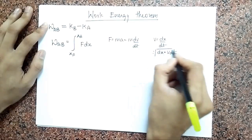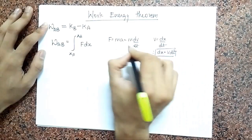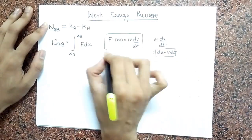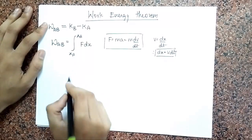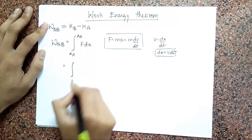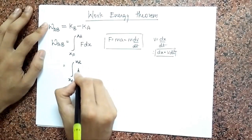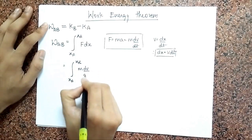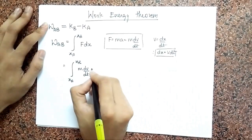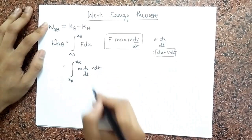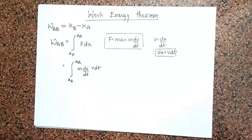So I am going to use these results in this particular equation. So I will get from XA to XB, I have M dV/dt, and I have a V dt over here.